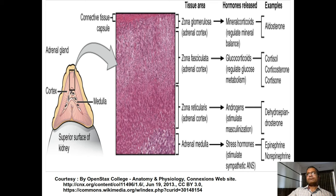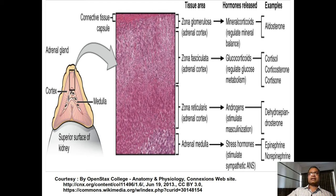Zona glomerulosa contains polyhedral cells arranged in arch columns, with capillaries present between these arch columns. Zona fasciculata also has polyhedral cells but arranged in vertical straight cords, with sinusoids and capillaries present between the cords.